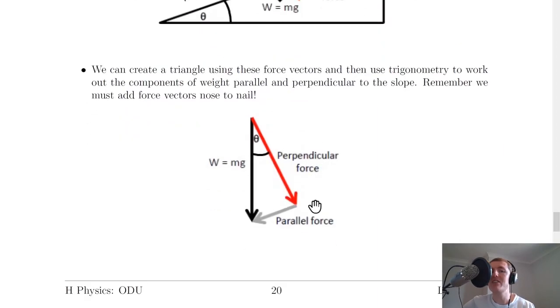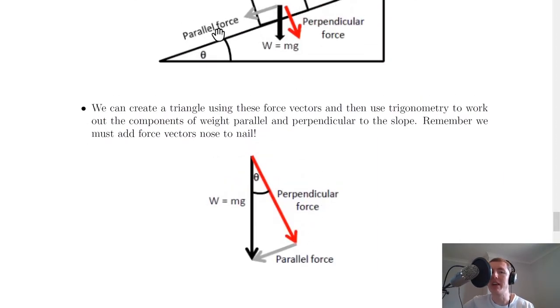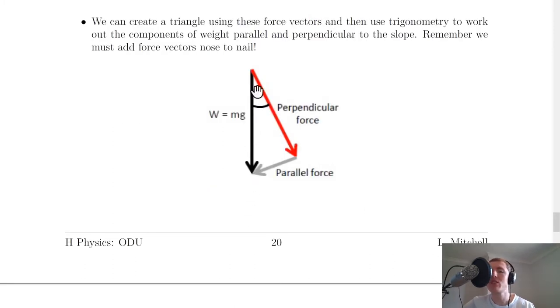Here we have an angle θ which is actually the same angle θ from the slope—it's from similar triangles. We have our weight vector W = mg acting downward, our angle θ in here, the perpendicular force, and the parallel force there.